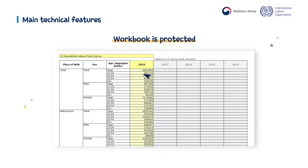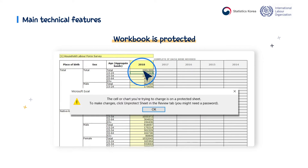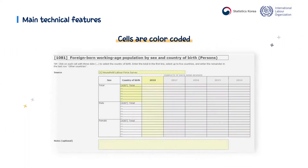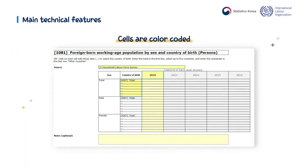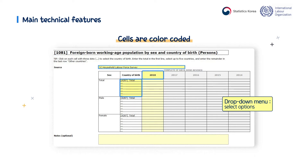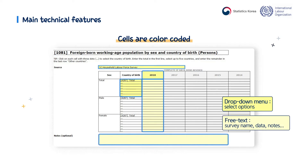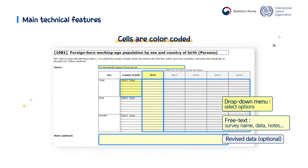The workbook is protected — please do not add or delete any cell or row. Cells are color-coded. Dark yellow cells indicate drop-down menus from which you can select options, such as a variable classification version, a type of data source, a geographical coverage, etc. Light yellow cells indicate that you are free to enter any text in those cells, such as the survey name, the data, some notes, etc. The gray cells indicate columns dedicated to revised data, which are optional — please only fill in revised data columns for previously submitted data that you wish to correct.